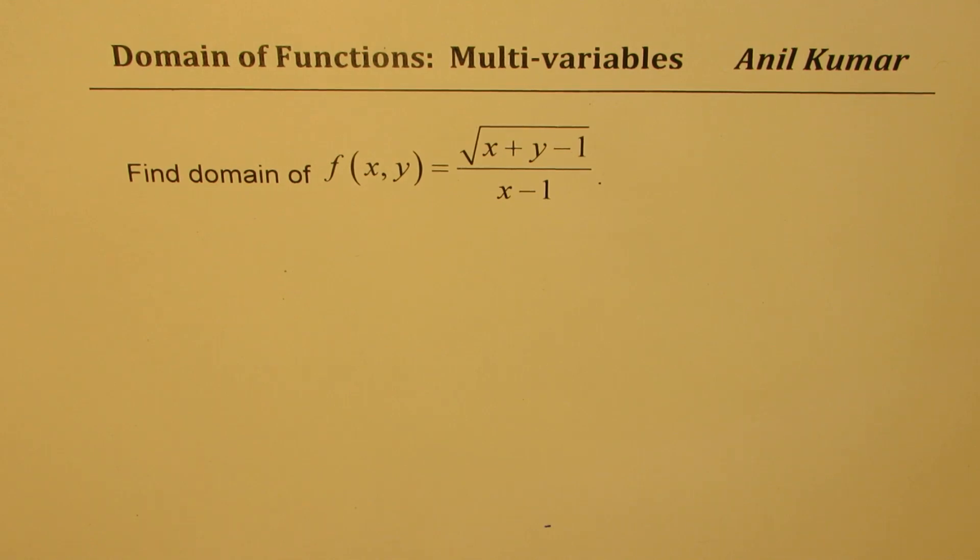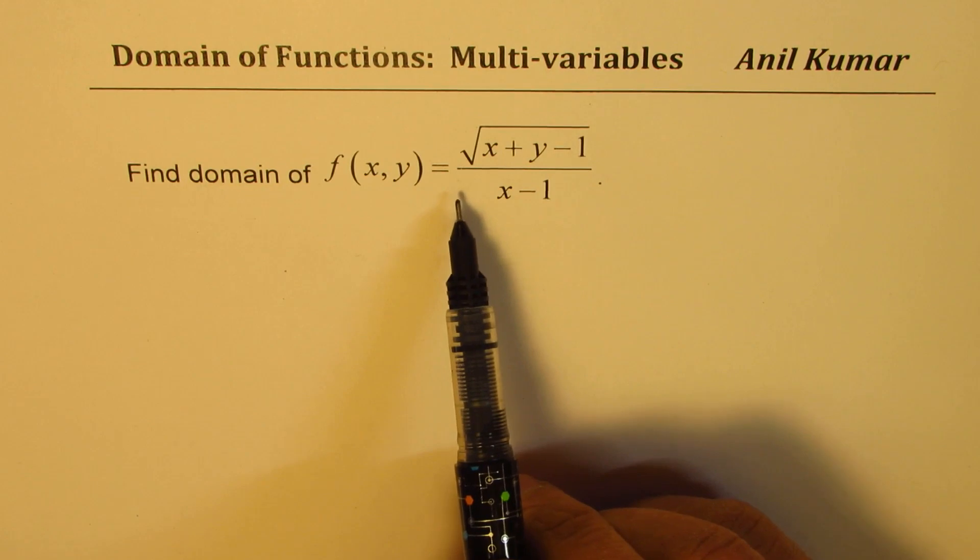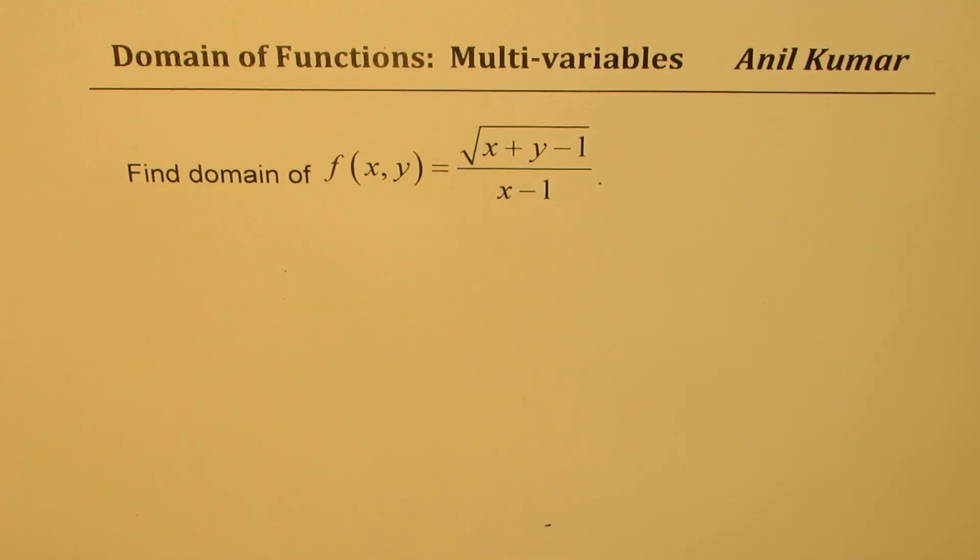Now the question here is find domain of function of both x and y which is written as square root of x plus y minus 1 divided by x minus 1.